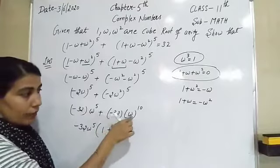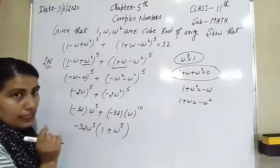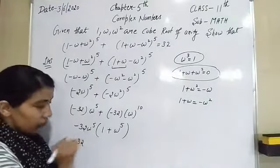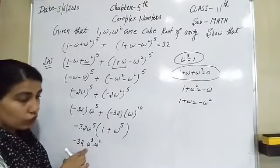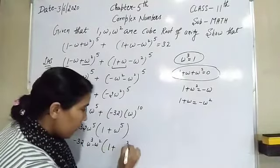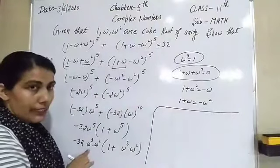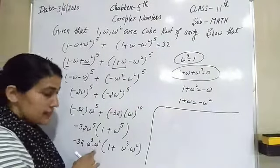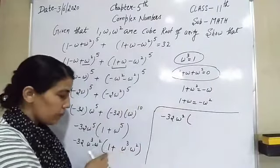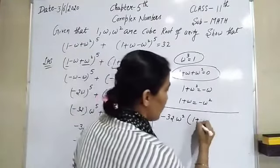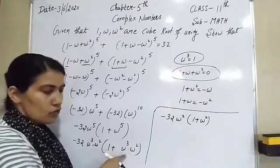Now ω⁵ = ω³ × ω² = 1 × ω² = ω². So we have −32ω²(1 + ω²). Inside the bracket, ω¹⁰ / ω⁵ = ω⁵ = ω². So it becomes −32ω²(1 + ω²). Since 1 + ω² = −ω, substituting gives −32ω² × (−ω) = 32ω³. Since ω³ = 1, the result is 32.